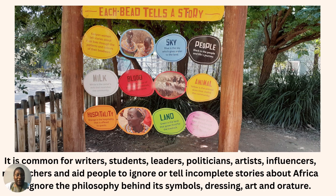It is common for writers, students, leaders, politicians, artists, influencers, publishers, and aid workers to ignore or tell incomplete stories about Africa. These incomplete stories ignore the philosophy behind its symbols, art, or orature. The picture shown here is a nice representation of the beads, but it is missing other elements — for example, spirituality is missing, and even Ubuntu itself is missing. It is an incomplete story that talks about aspects of African art and culture, but does not link that to Ubuntu. There is a common, binding philosophy, which is Ubuntu.